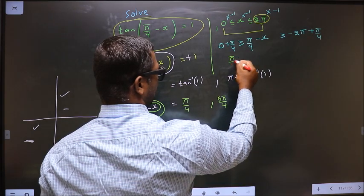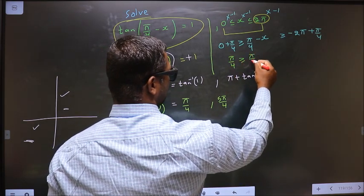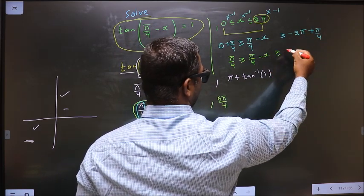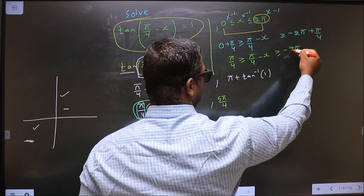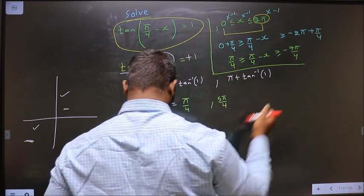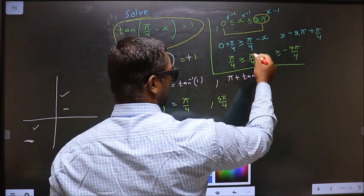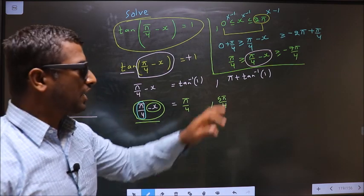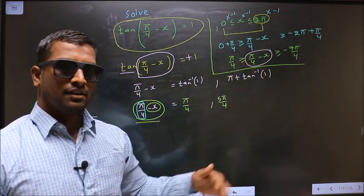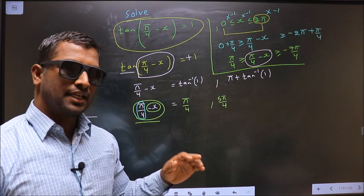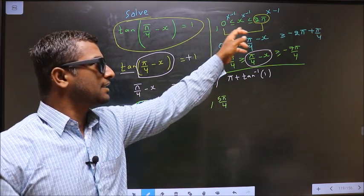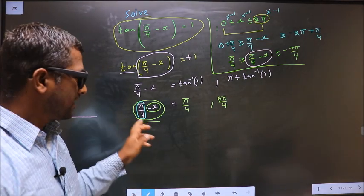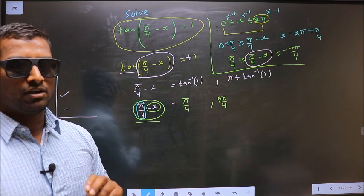After adding π/4 throughout, we get: π/4 ≥ (π/4 - x) ≥ -7π/4. So the values of (π/4 - x) must lie in the interval [-7π/4, π/4]. When that condition is satisfied, the values for x will automatically lie in [0, 2π].